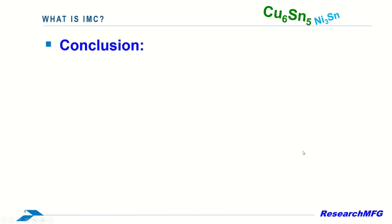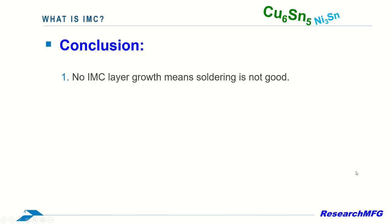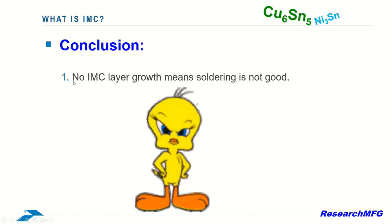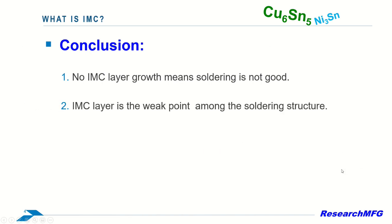Now we can get the conclusion. First, lack of IMC layer growth indicates poor soldering quality. Second, IMC layers are the weak points within the soldering structure.